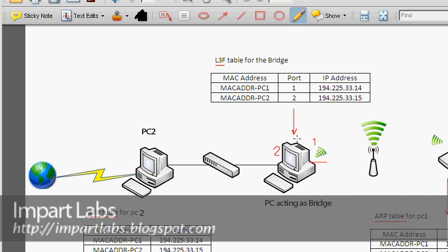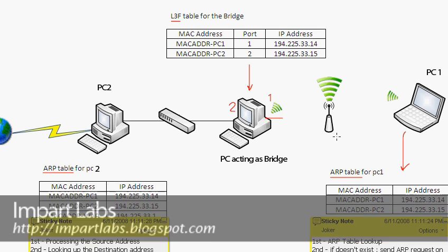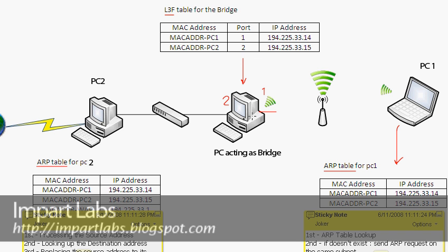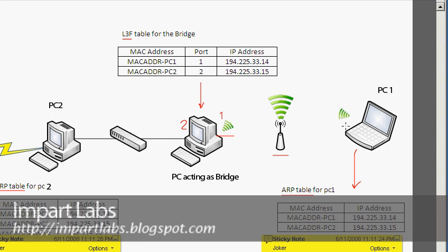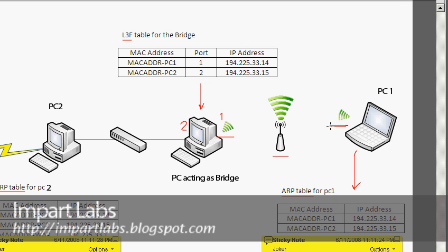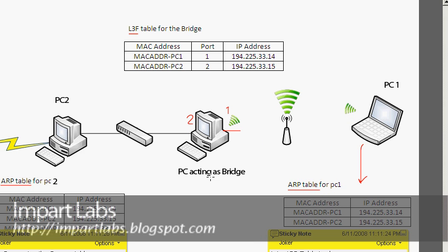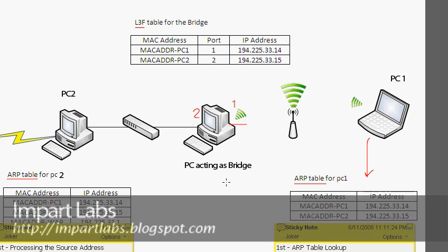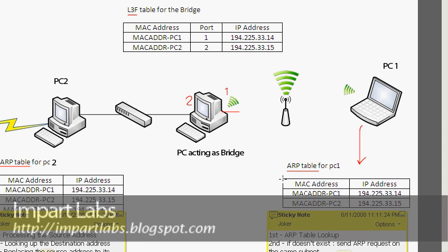This computer is going to act as a bridge. It has two connections: one to the wired network and one to the wireless network. There is an access point to which the laptop is connected, and this other computer also has a connection to that access point. The computer in the middle is going to act as a bridge for us.